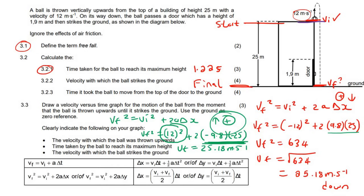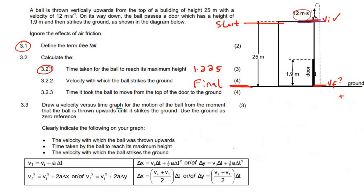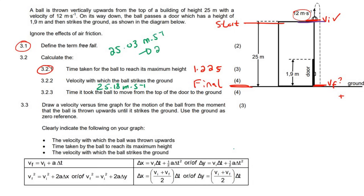We got 25.18 m/s. On the memo, depending on the method used, slightly different answers were accepted — anywhere between 25.03 and 25.59 m/s is fine, since different techniques in the previous part would affect this answer.